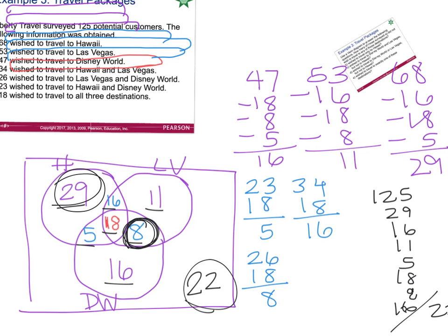For the question about Disney or Vegas, you would add the 16, the 8, and the 11 together, then exclude the 18 and the 16 as needed. Last, how many people wished to travel to exactly one of these destinations? Exactly one destination would be just the people in the outer single regions — that would be your 29, your 11, and your 16.